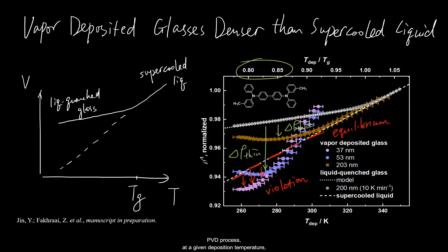As we were talking about the PVD process, at a given deposition temperature, free surface molecules are hypothesized to relax into lower-energy non-equilibrium states. That PVD glass is what has been extensively studied by the glass community. However, for what we are seeing here, the thin vapor-deposited glasses are lower in volume or energy than even the supercooled liquid.